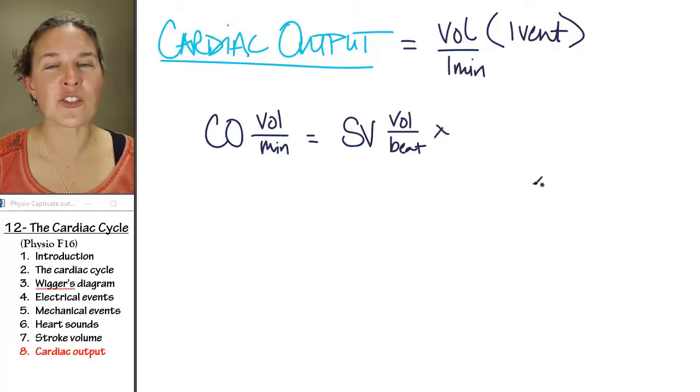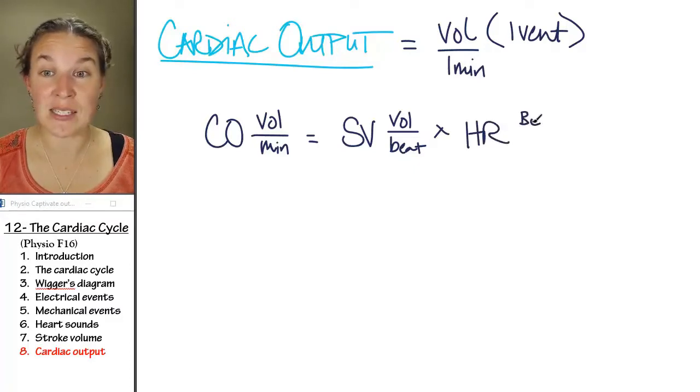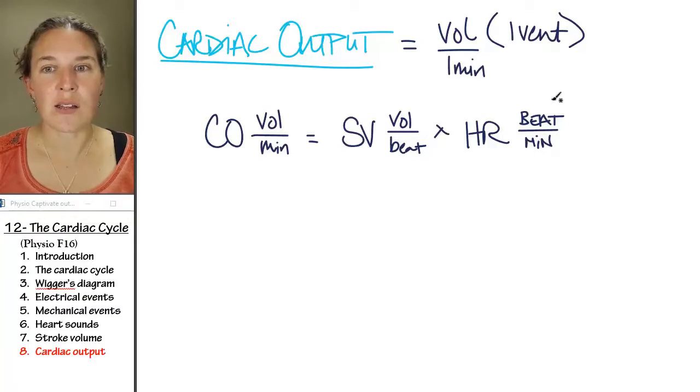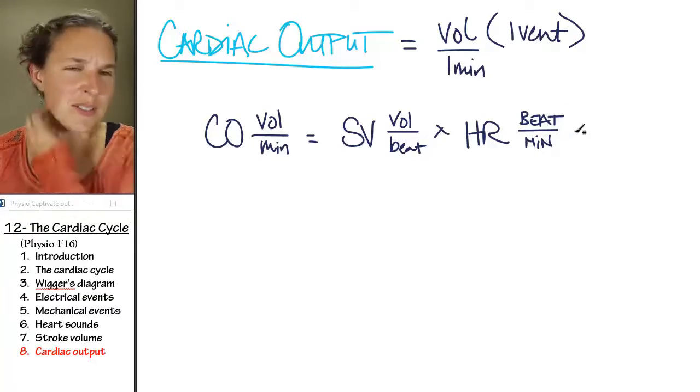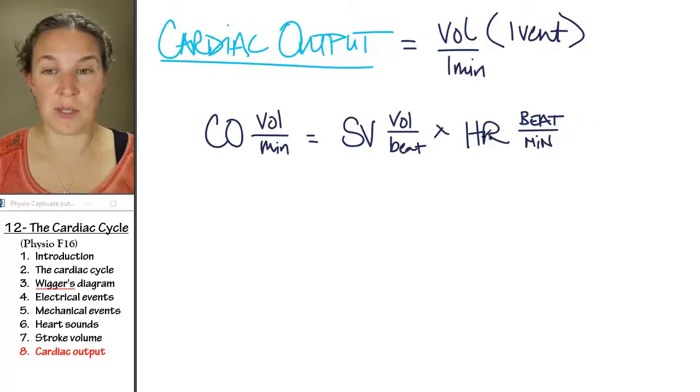And if you multiply your stroke volume by your heart rate, which is beats per minute, what you're going to see if you do some magical dimensional analysis. I call it factor labeling, but I don't know what anybody else calls it.